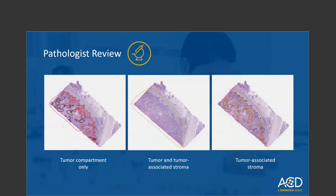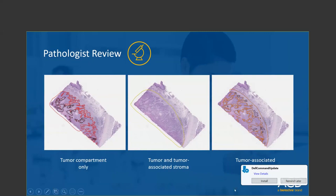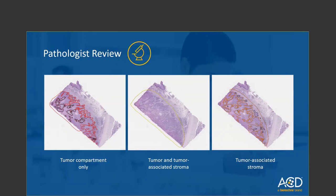There is always a pathologist review at the beginning and at the end of Halo analysis. It is important to identify regions of interest correctly. In an image with a tumor component and surrounding normal tissue, it is important to identify each of these correctly. The Halo specialist sits with the pathologist to annotate images and correctly identify each region. In the first image, just the tumor compartment is outlined in red. In the next, both the tumor and tumor-associated stroma are shown together. In the third image, it's just the stroma outlined in black.